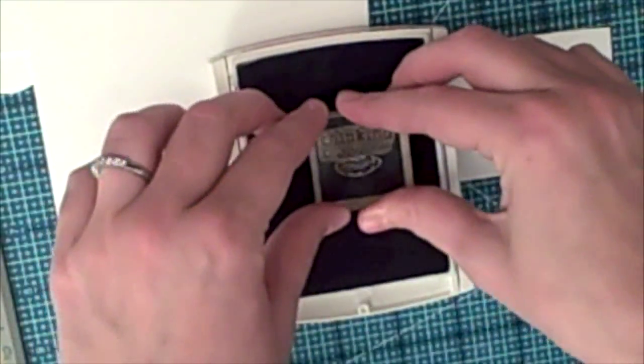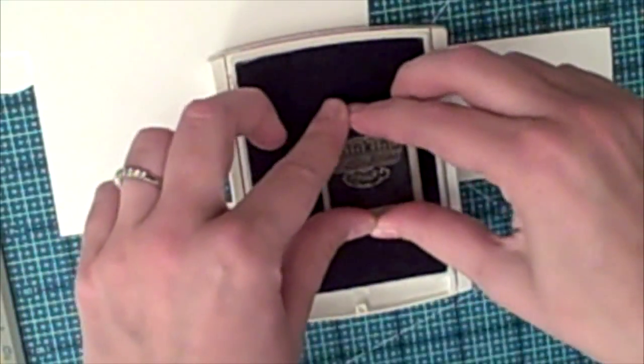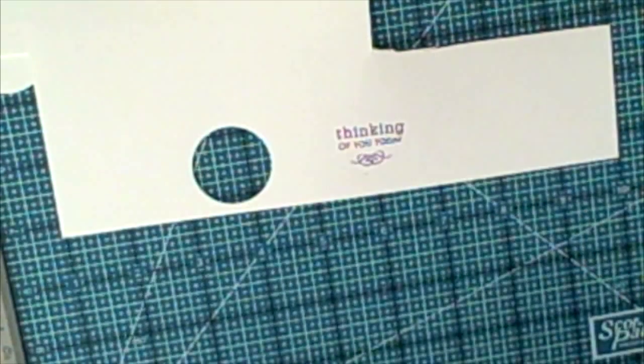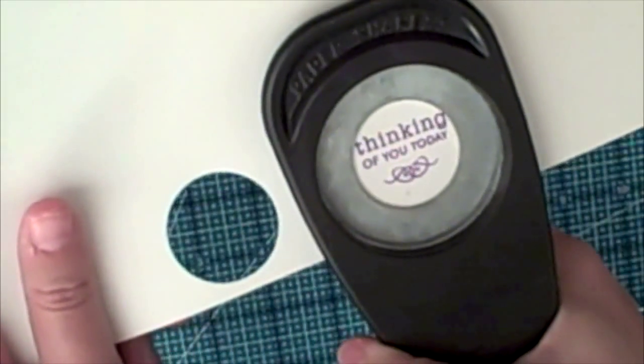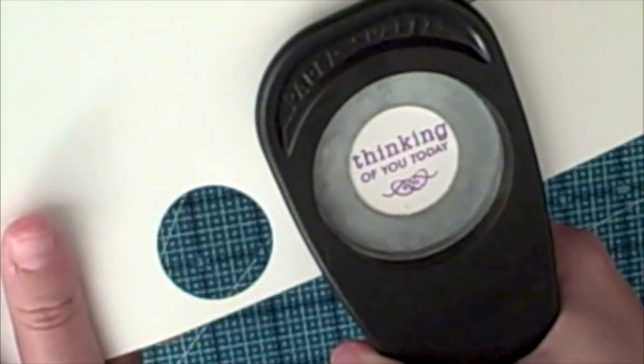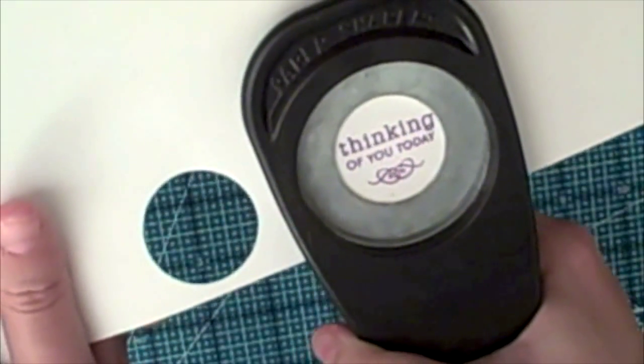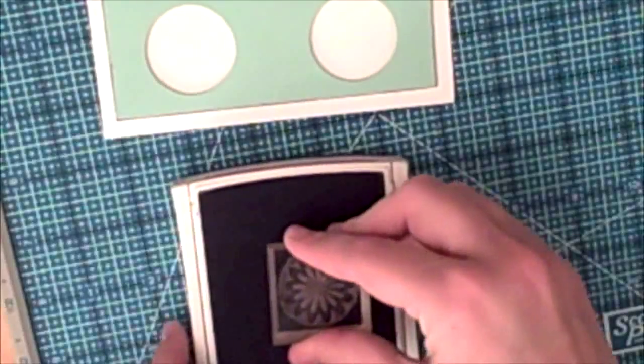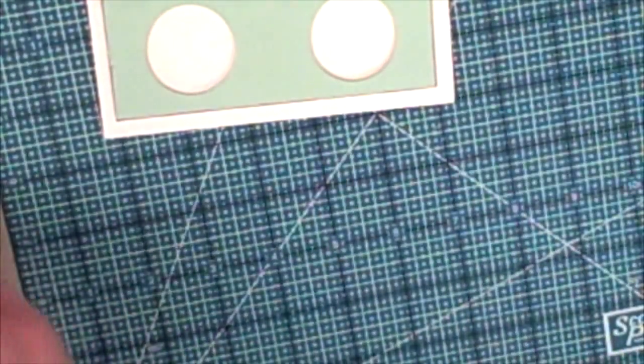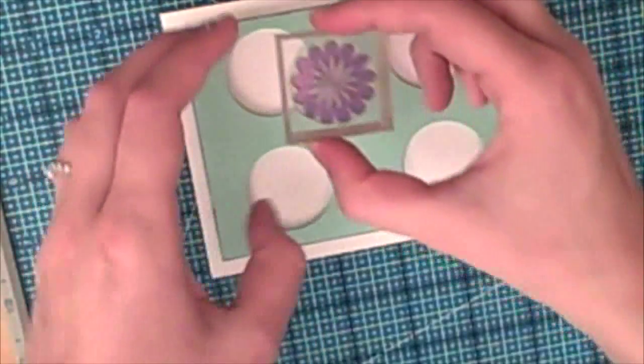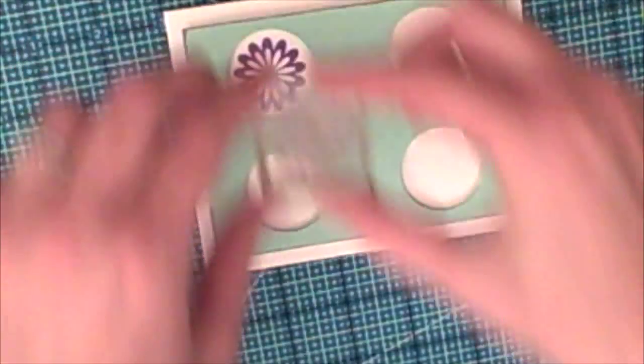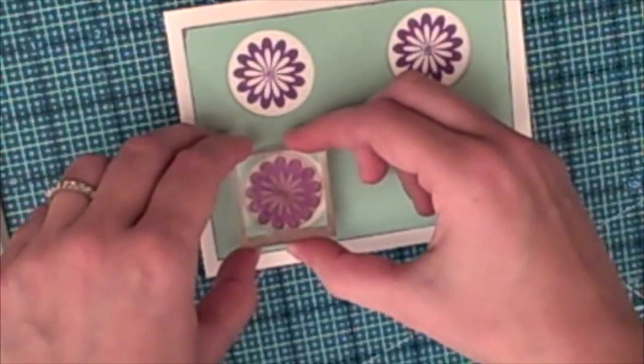So right now I'm taking out this color called Orchid Opulence by Stampin' Up dye ink. And I'm going to stamp this image. It does say thinking of you today. And I'm going to punch that out with a one and one quarter inch circle punch. So just punching that out, and we're going to use that in a little bit later on the card. So I'm just going to put that aside.